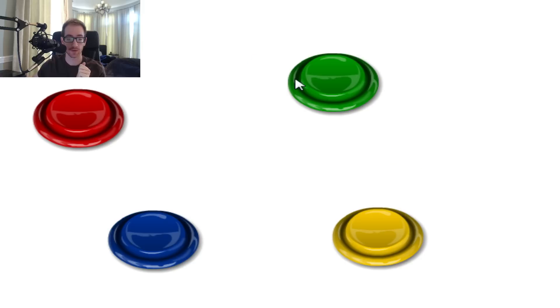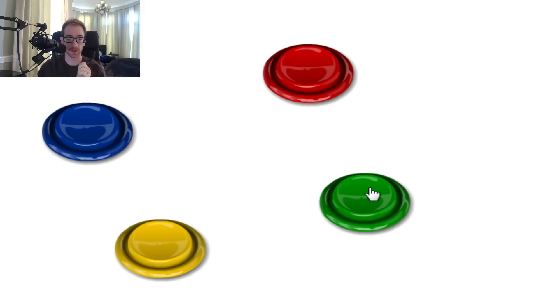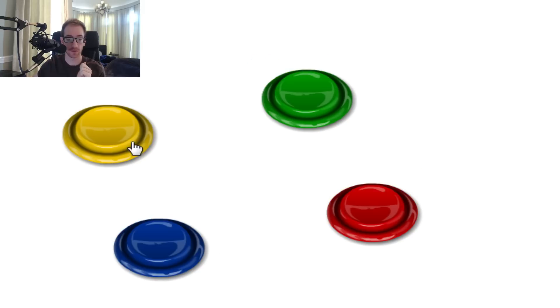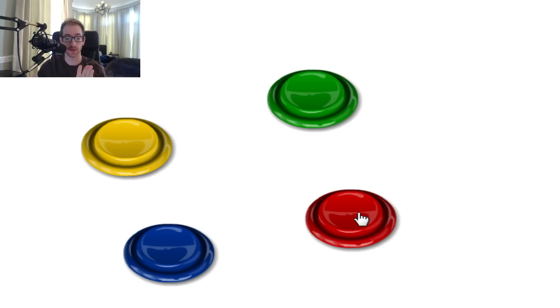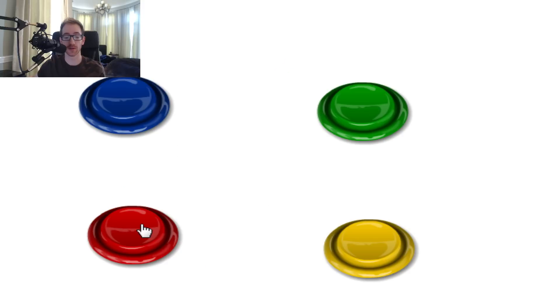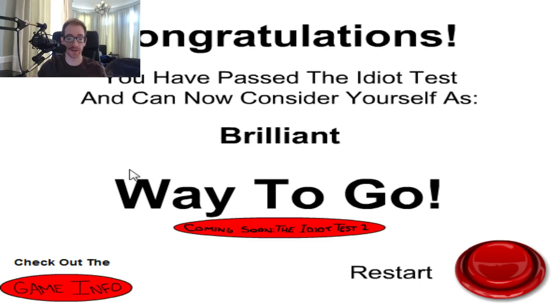Jesus Christ. I gotta pay attention here. The blue button three times. Three, three, two, four. That's easy to remember. Blue, green, yellow, red. Okay, three, three, two, four. Blue, green, yellow, red. Blue three times, green three times, yellow twice, and then red four times. Blue's gonna go three. Green's gonna go three. Yellow's gonna be twice. Red's gonna be four times. Goddamn, we did it.